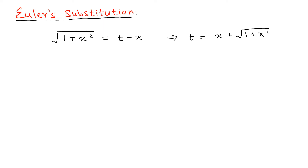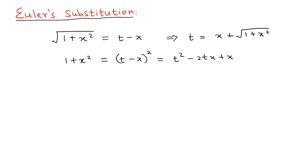After we have the substitution, we also need to find the differential using the new variable. To do that, we first simplify by squaring both sides. Once we square both sides, we get 1 plus x squared on the left equal to t squared minus 2tx plus x squared on the right. Something interesting happens — you can see that the x squared terms get cancelled out.